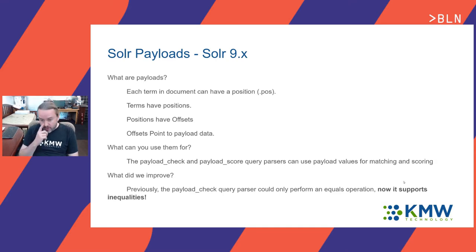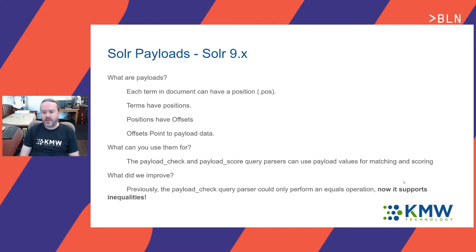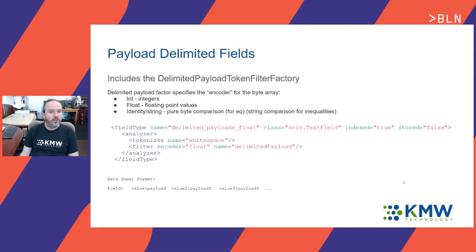Previously, the payload check query parser could only perform a pure equality operation — like does the payload equal a specified value. But we saw a very simple improvement to make: just to support inequality operations — greater than, less than, greater than or equal to. This really opens it up to a wider range of use cases with relatively minimal impact to performance compared to normal payload checks.